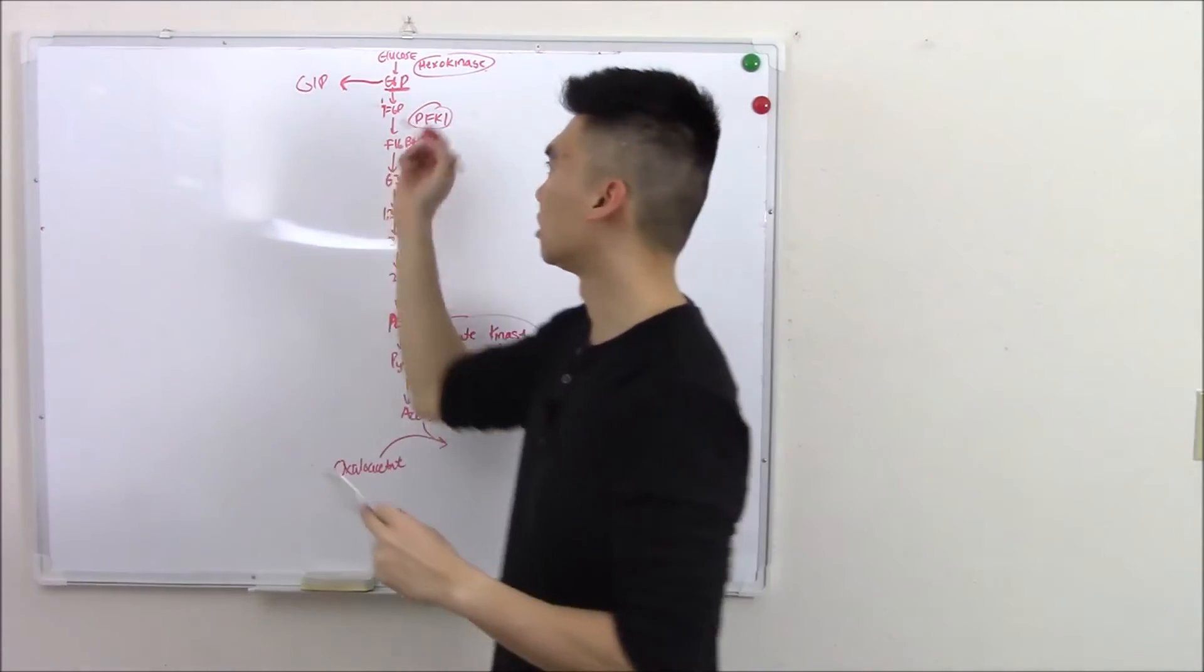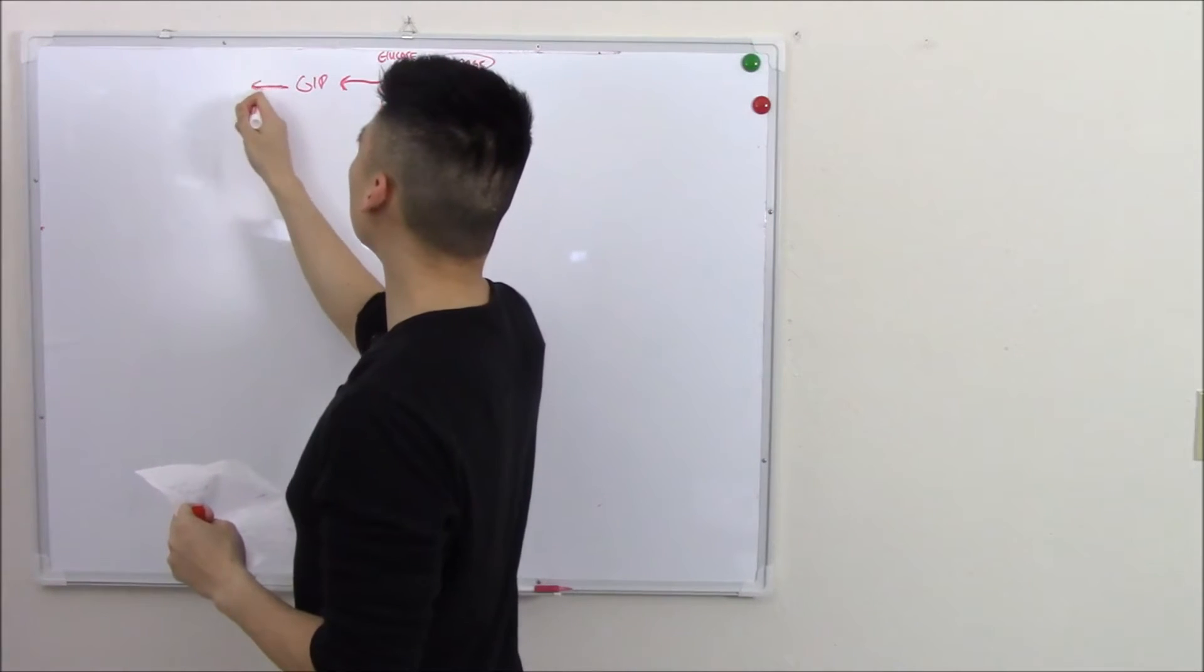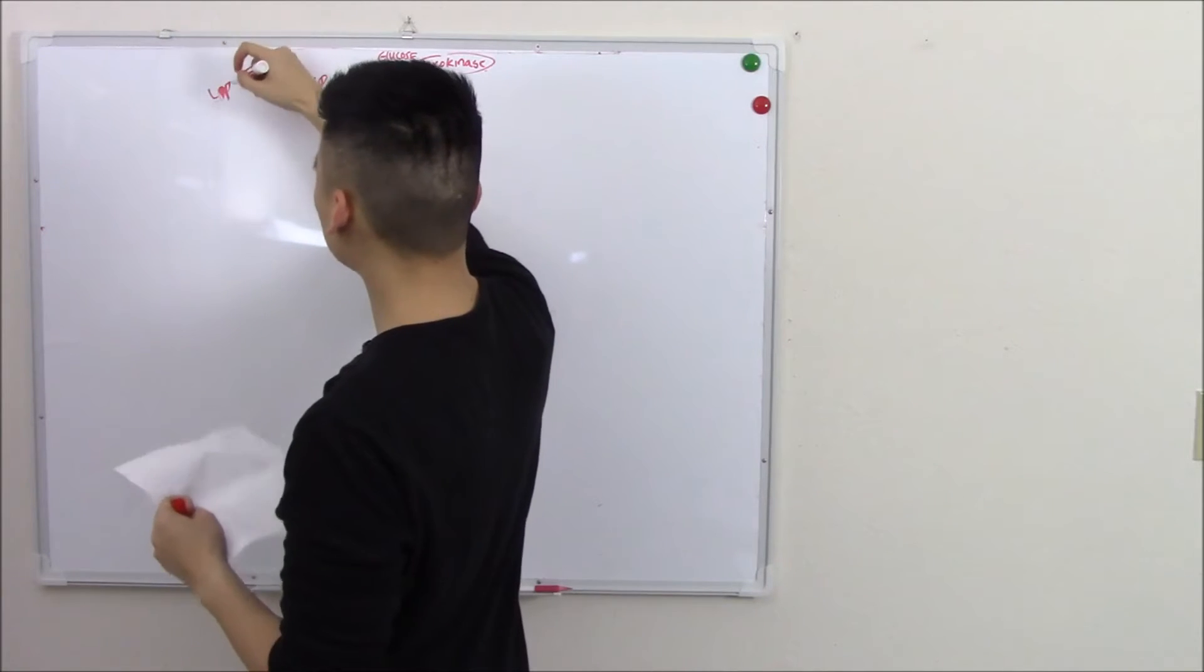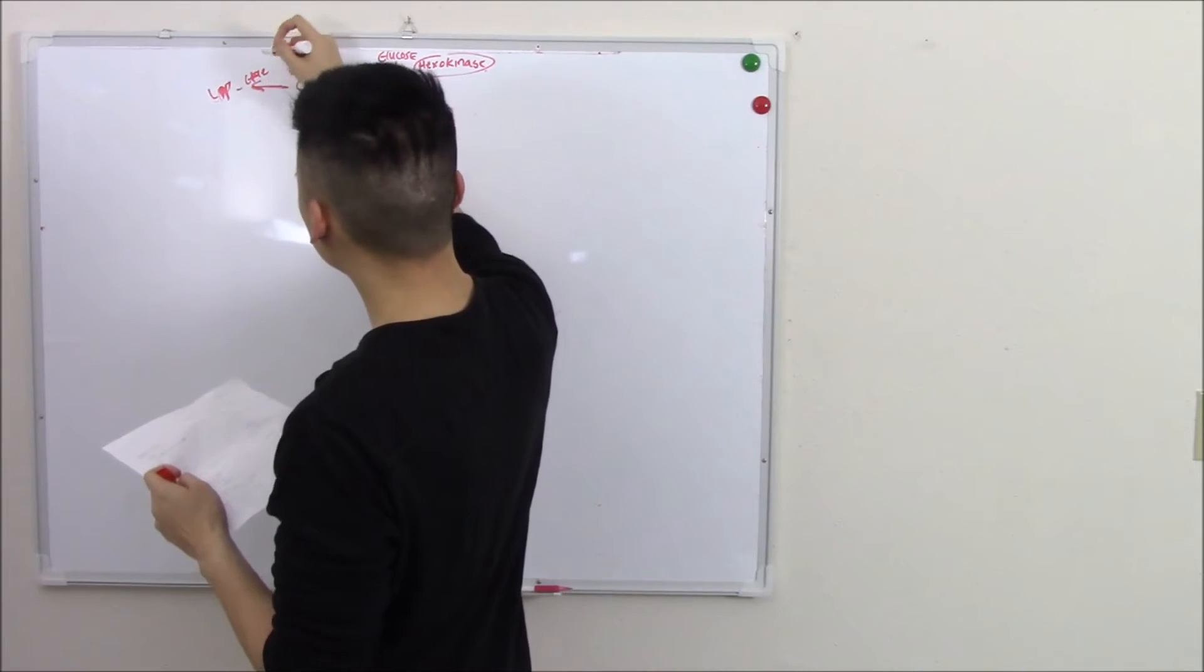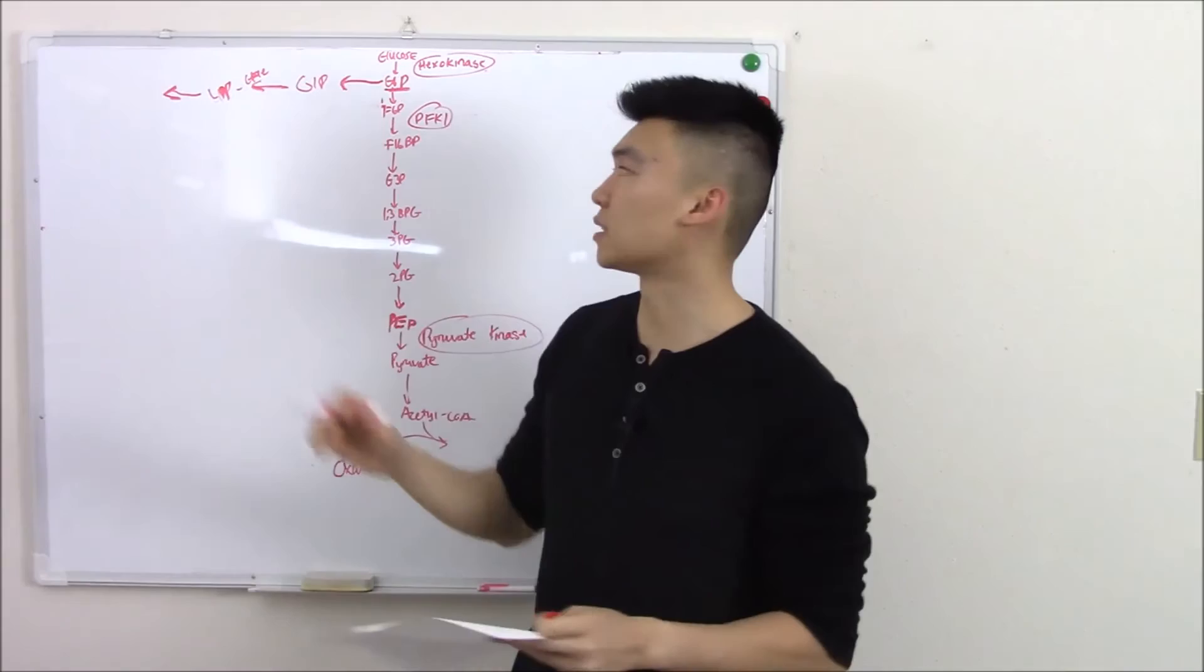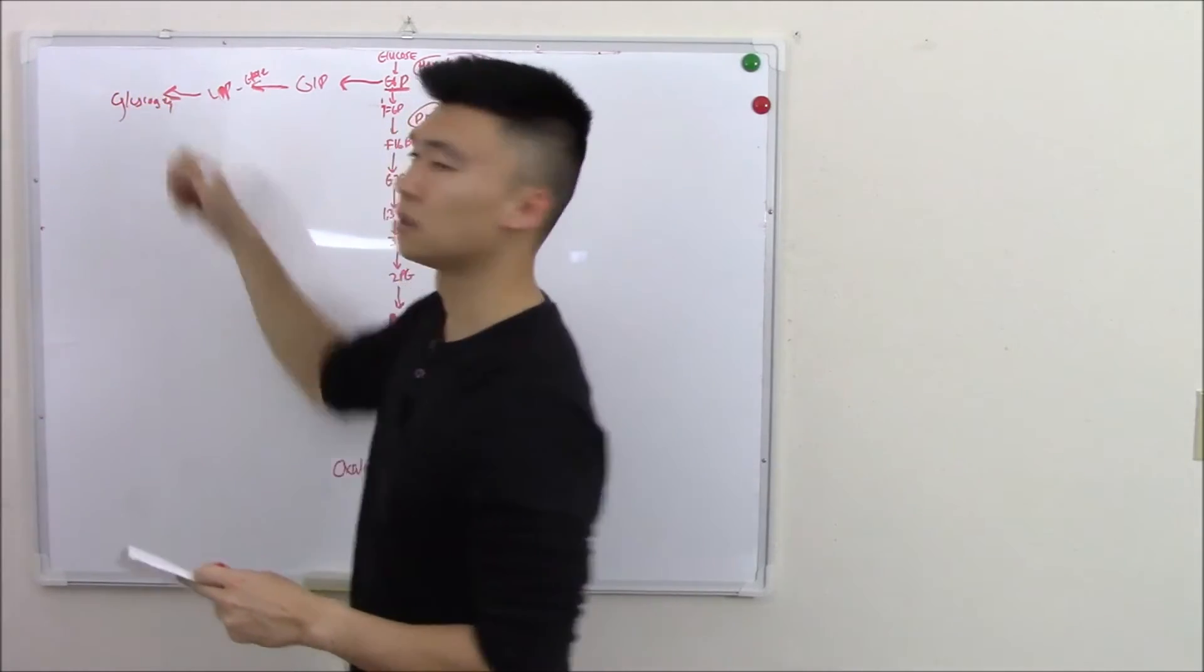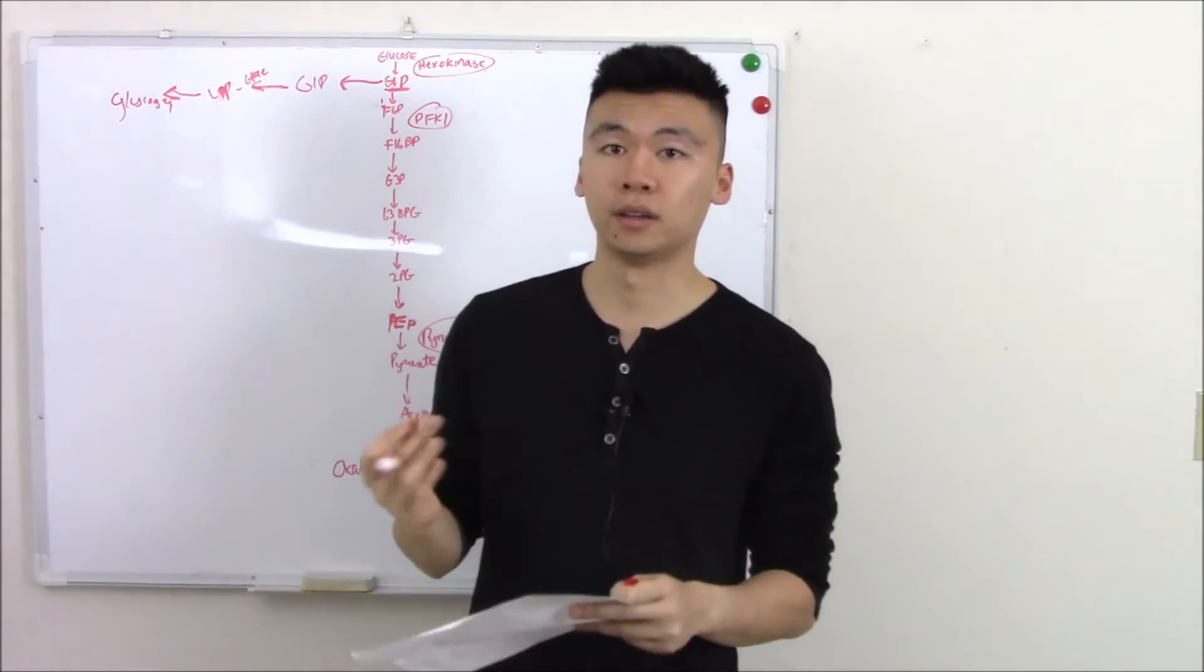This turns into UDP glucose, and finally, chaining UDP glucose together gives you glycogen. A lot of people think glycogen is just chains of glucose - it's not. It's chains of UDP glucose.